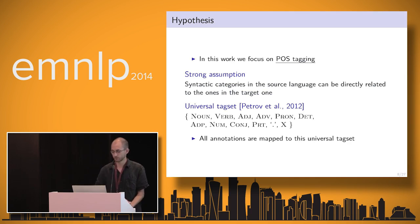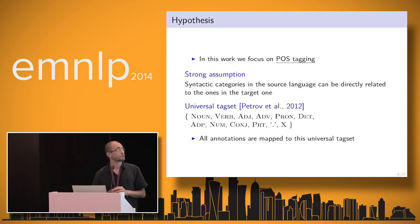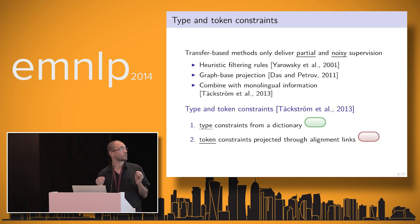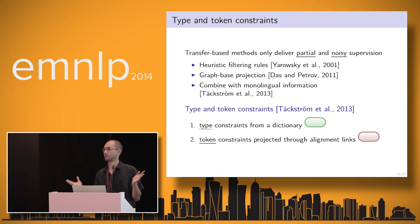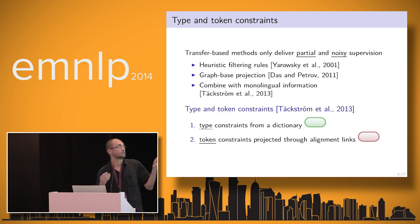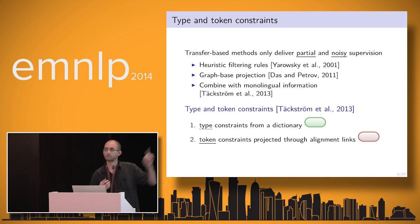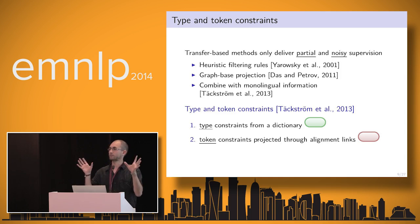How do we project labels across aligned corpora? We need a strong assumption that we can project syntactic information from one language to another — of course, this is not always true. To do that easily, we use one universal tagset, the one of Petrov 2012, which allows, more or less, to build a similar tagset for all languages, so we can directly project a noun in one language to a noun in another.